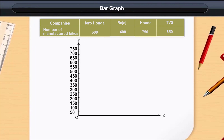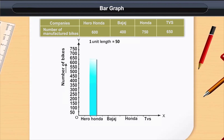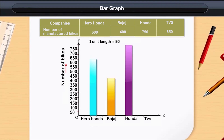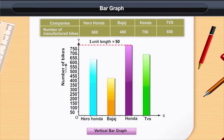Here on this bar graph, we mark different companies on the horizontal line and the number of manufactured bikes on the vertical line. It is important to choose a proper scale on a bar graph. A scale means a number used to denote the length of one unit of a bar. Here we take one unit length equal to 50 bikes.